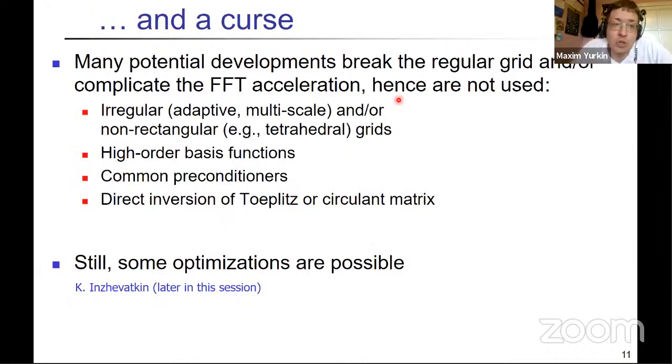And then if you combine it with iterative solvers, and you assume that number of iteration that it's needed will be quite small, then you arrive at computational complexity of the whole method, which is not like n squared or n cubed, which would be impossible for this number, but almost linear in number of n. And that's the only thing that makes DDA suitable for such large number of dipoles. However, this blessing is also a curse because many potential developments that you can easily think of for such a method, they will break this regular grid. And that's why at least some of them here, they usually not possible with the DDA, or at least they're much more complicated than you would think from the beginning. Well, still, some optimizations are possible. There will be a talk later in this session about that.